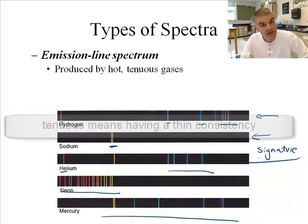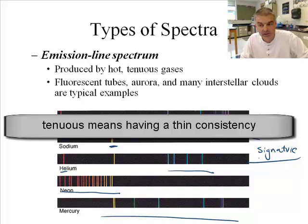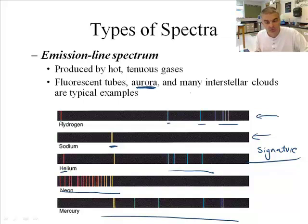Let's talk about this. It's produced by hot, tenuous gases. Fluorescent tubes, aurora, and many interstellar clouds are typical examples. So, if you want to look at an aurora, you may not know what an aurora is, but we'll learn about it. And also, many interstellar clouds are examples of things we can get emission lines.